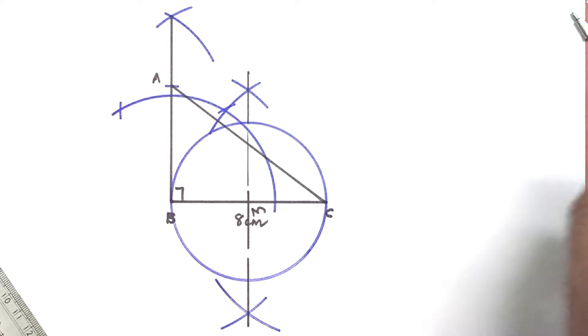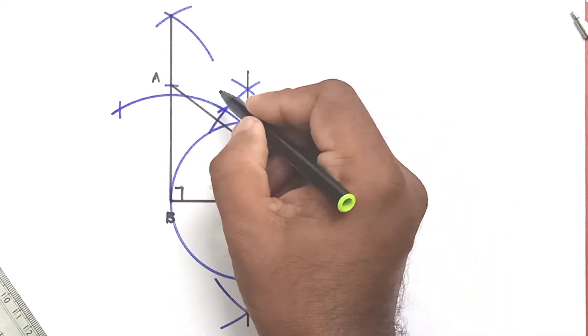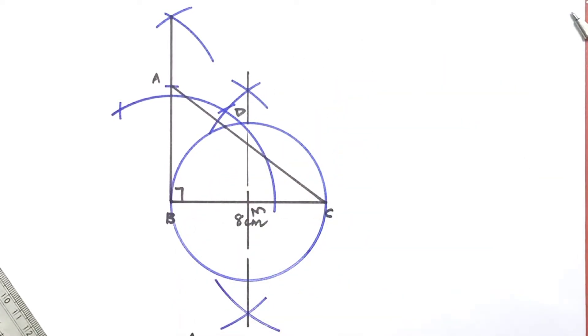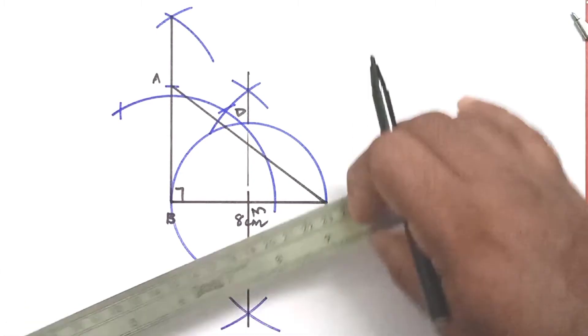This circle will intersect the hypotenuse of triangle ABC at the point D. This point is D, so we can join BD.